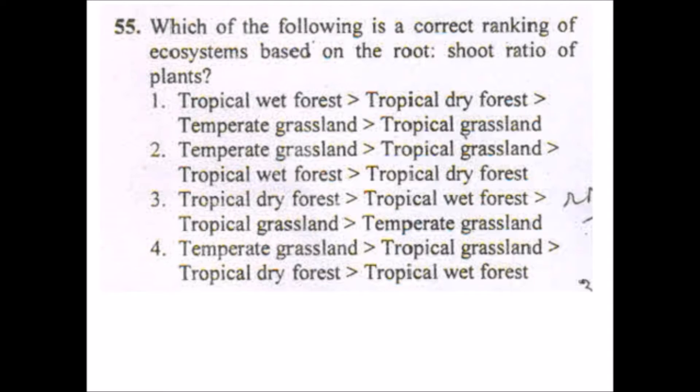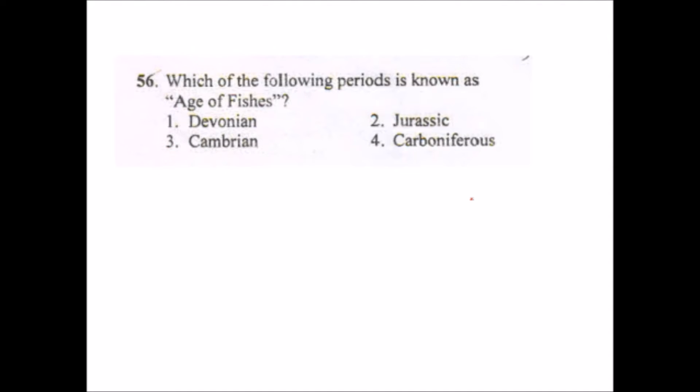Next is: which of the following is the correct ranking of ecosystems based on the root shoot ratio of plants? Actually we can't calculate the root and shoot ratios directly. There are certain processes like picking out of the plants and drying their roots and shoots and calculating their dry mass. So after all this process we come to know that the answer will be option two.